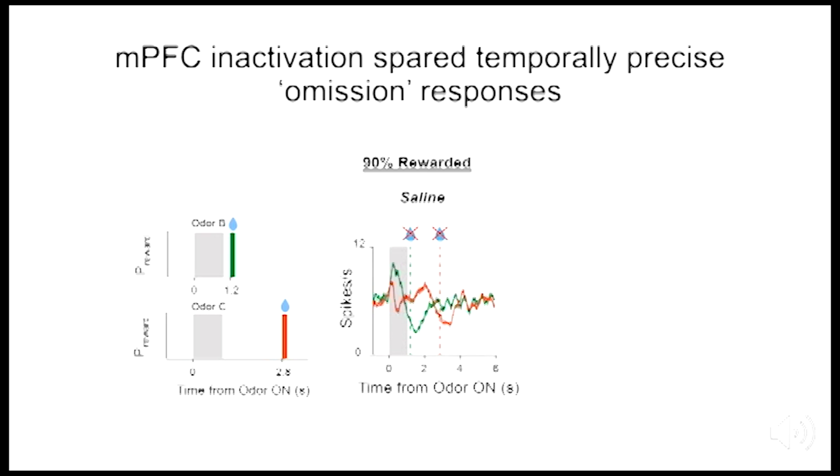To further rule out the possibility that interval timing was affected by medial prefrontal cortex inactivation, we examined dopamine responses to reward omission and found that dopamine neurons still paused their tonic firing levels precisely at the time of an omitted reward in these control trial types with constant cue reward timings. So a representation of when rewards usually arrived seemed to be intact upon medial prefrontal cortex inactivation.